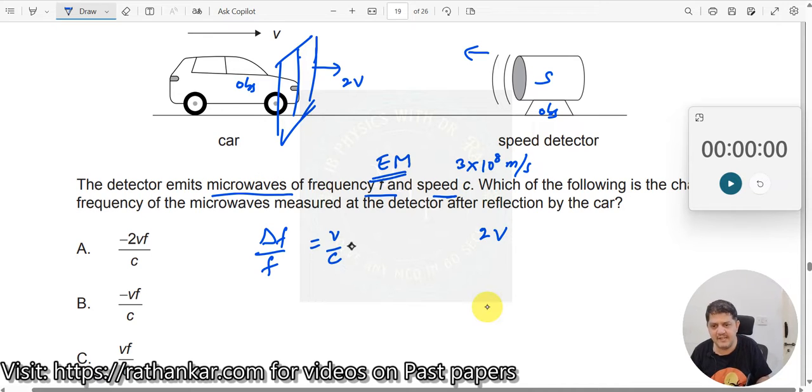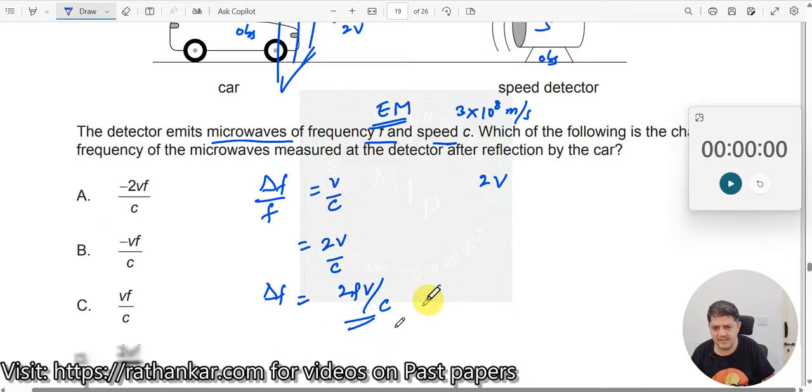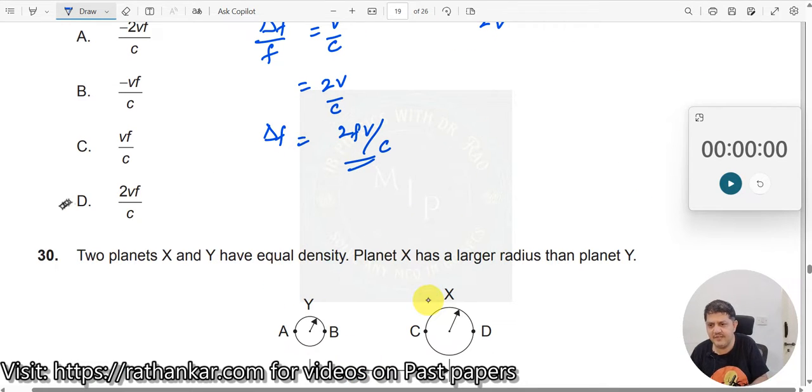Thus what will happen here is that this becomes 2v and this c remains constant. So delta f will be equal to 2fv divided by c. This should be your answer. 2fv by c, which is your answer D.